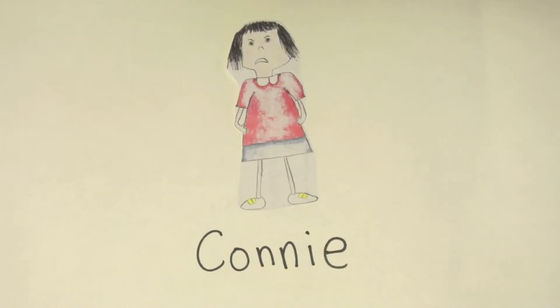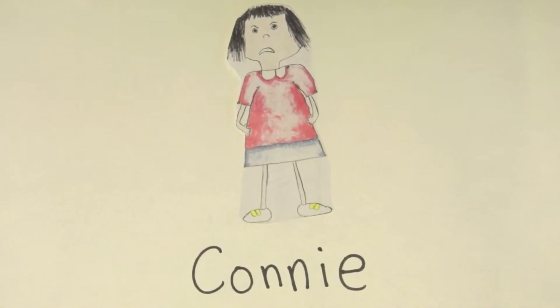In the book, the main character is Connie. We're going to put Connie in the middle of the mind map as she's the main character.